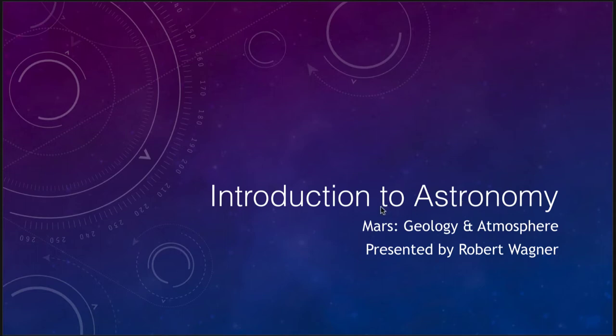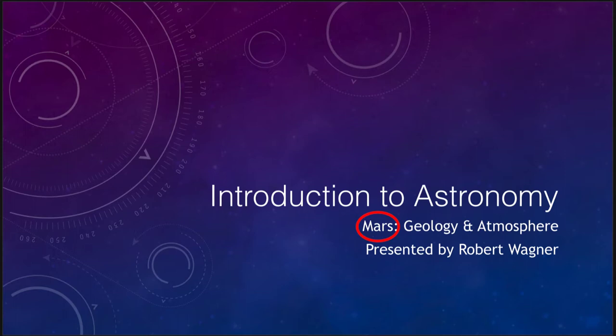Mars is one of the primary planets that we look at for a possibility of having life, and that's because it is the only planet other than Earth that has been known to have liquid water on its surface in the past. The conditions on Mars no longer allow liquid water, but because that possibility existed in the past it gives us the hope that someday we'll be able to find some kind of either life or fossilized remnants of Martian life that might have existed at one time.